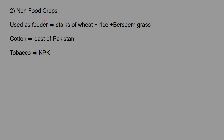Non-food crops are used as fodder for animals and can be made from stalks of wheat, rice, and bursi grass. Cotton is a non-food crop grown in eastern Pakistan, and tobacco is mostly grown in KPK.